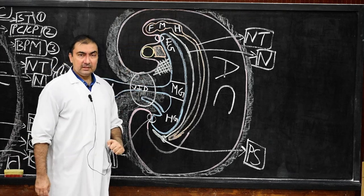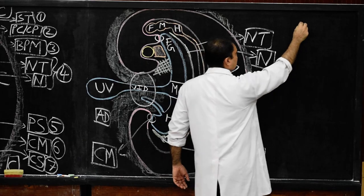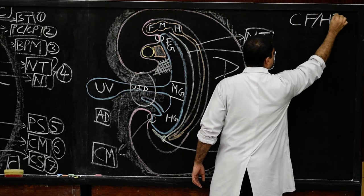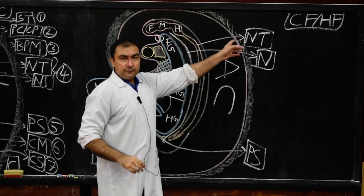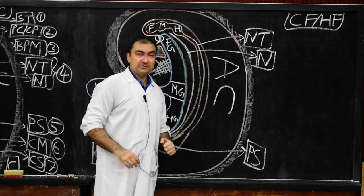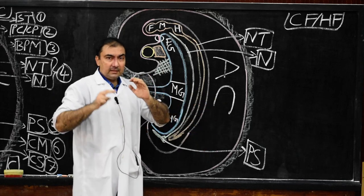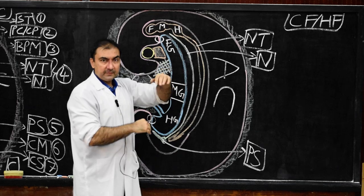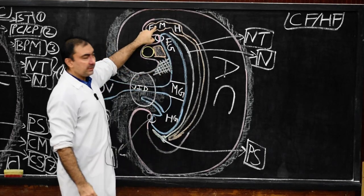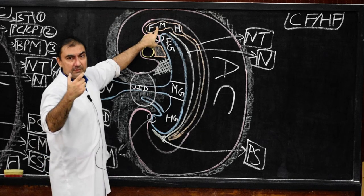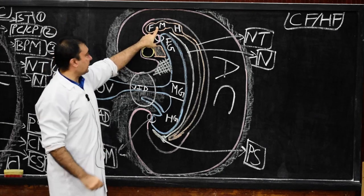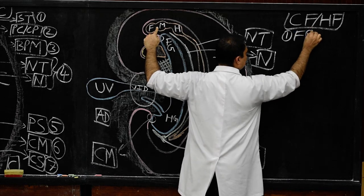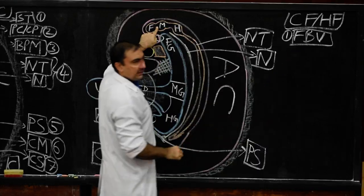Now we start with the cephalic fold — also known as the head fold. In the head fold of the embryo, we include the following structures from cephalic to caudal. The first and most cephalic structure is the forebrain vesicle of the neural tube, which forms the most cephalic end of the entire head fold.